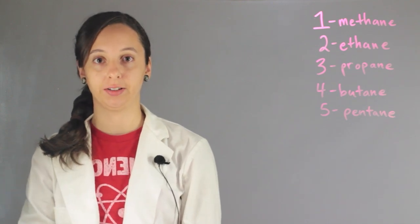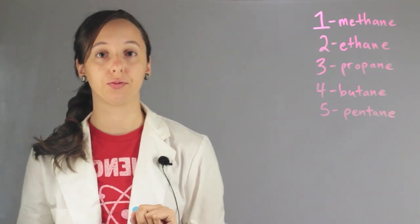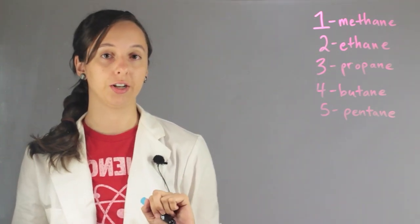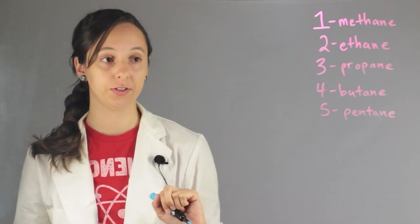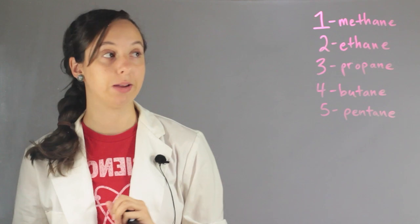Butane is a name that we use to identify any type of alkane that just has four carbons and no double bonds, no triple bonds. So right here I have our list of our simple alkanes and their names.